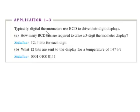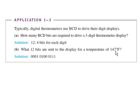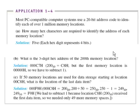Application three: typically, digital thermometers use BCD — Binary Coded Decimal — to drive their digit displays. How many BCD digits are required to drive a three-digit thermometer? What 12 bits are sent to the display for the temperature of 147 (base 10)? What would that code be?